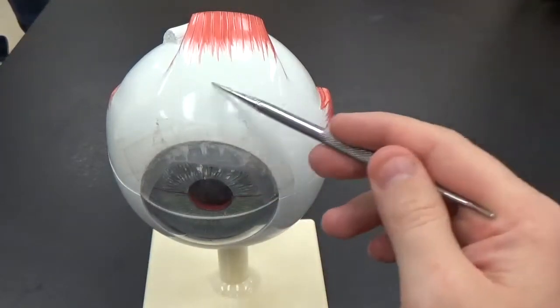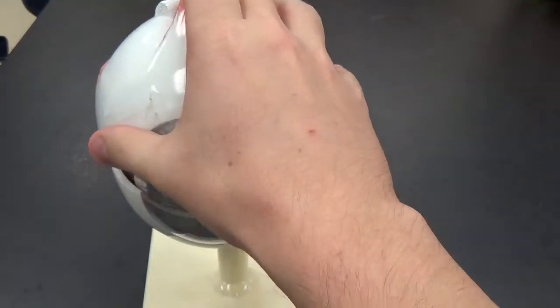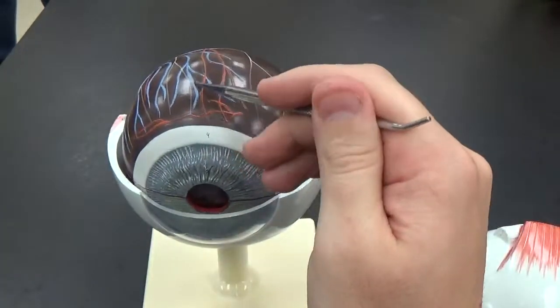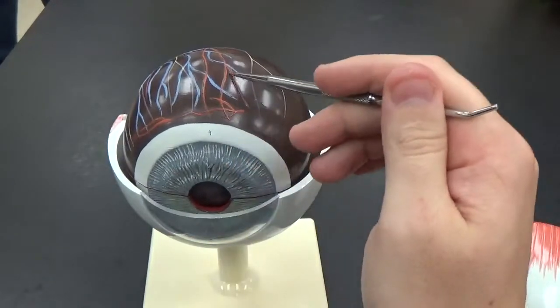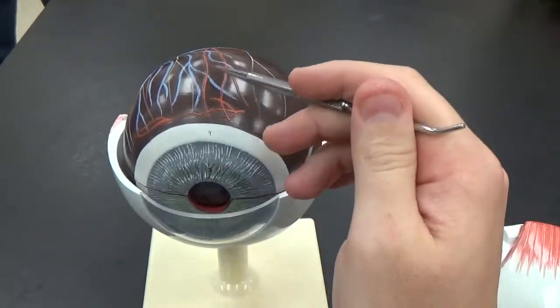The sclera is the white part. The second layer is this darker part here. This is our vascular layer, called the choroid layer.